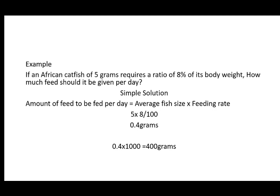To know the total quantity of feed for all the fish in your pond, multiply 0.4 grams by the total number of fish. For example, if you have 1,000 fish: 0.4 × 1,000 = 400 grams of feed per day for 1,000 fish. This is exactly how you calculate the right quantity of feed to give your fish to avoid overfeeding or underfeeding, which can deteriorate water quality and expose fish to diseases and mortalities.